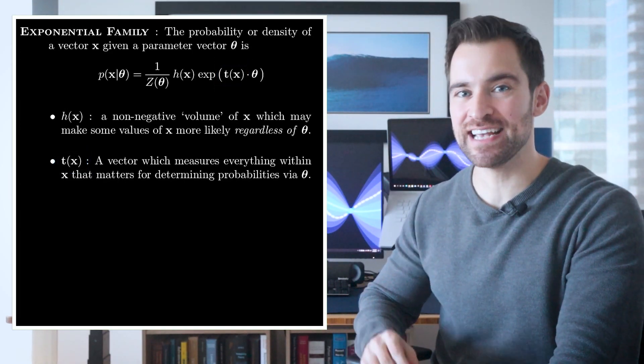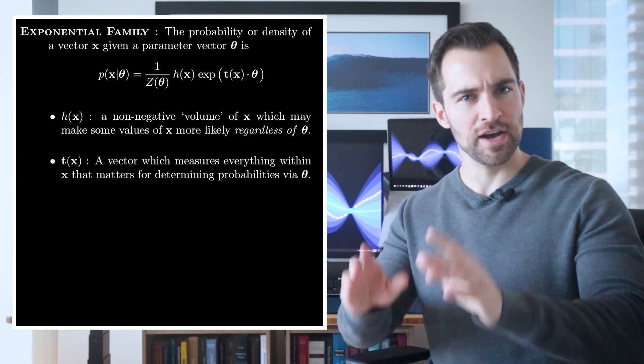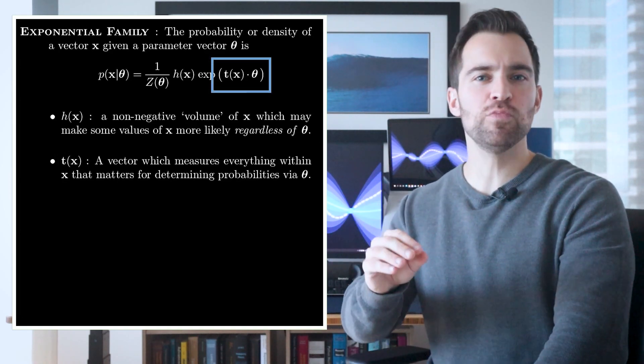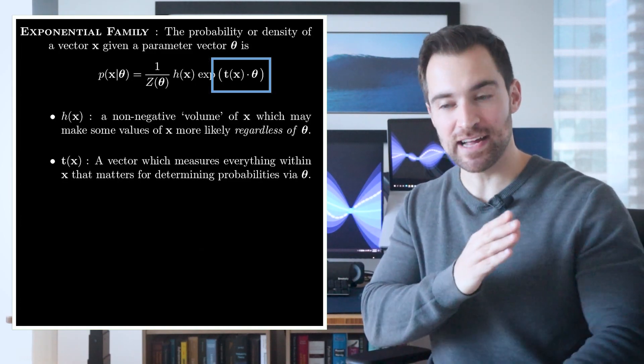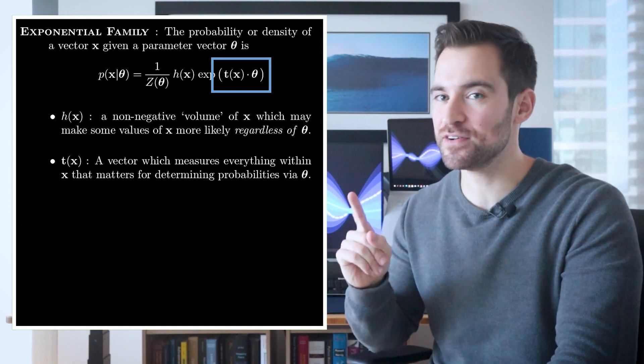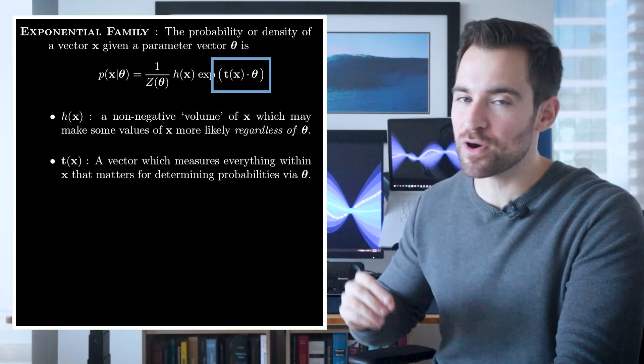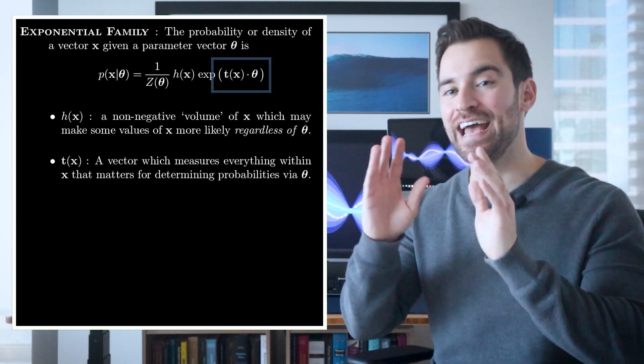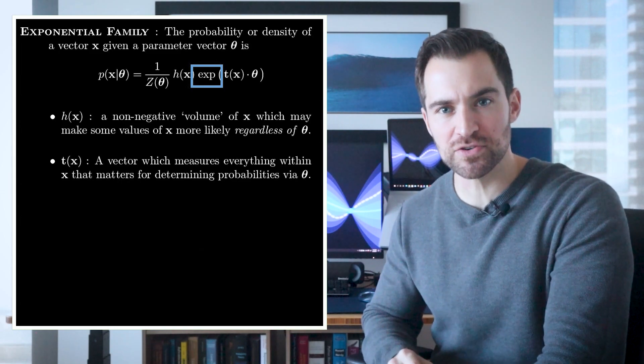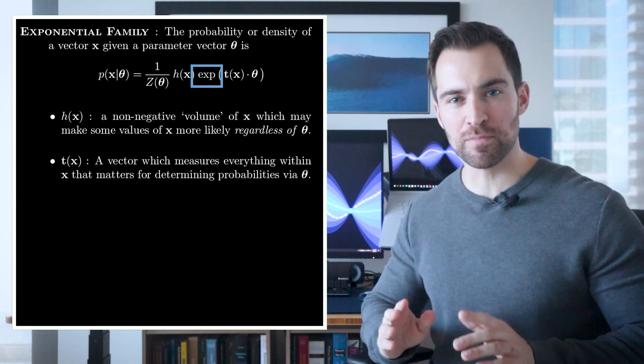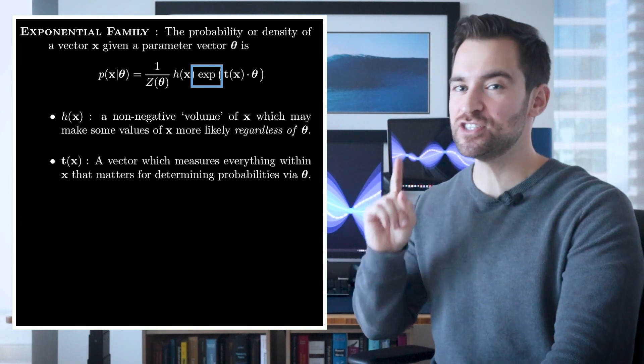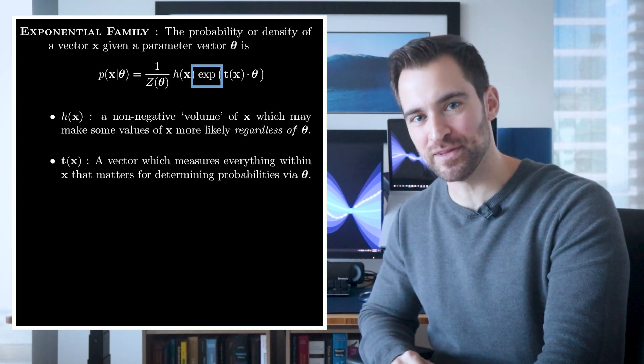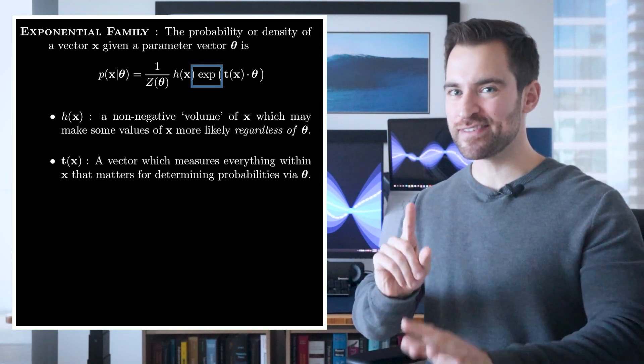Next, let's consider how the sufficient statistics impact the probability. First, we recognize that we'll take the dot product of t of x with theta, meaning we'll multiply each element of t of x with each of theta and sum those up, giving us a single number. Now, the dot product can yield a number anywhere on the number line, positive or negative, but it works its way into the probability through the exponential function. If you're familiar with exponentials, you know that raising e to any real number always yields a positive number. So this term must be positive, which is another defining and simplifying feature of the exponential family. Okay, deep breath, we're halfway there.